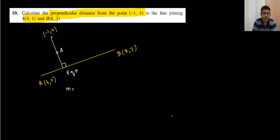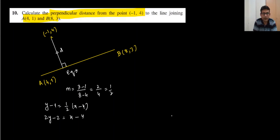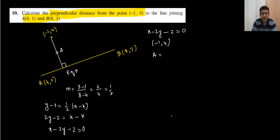The gradient of line AB is: 3 minus 1 divided by 8 minus 4, which is 2 over 4, equals 1 over 2. Using the point-slope form with point (4, 1): y minus 1 equals one-half times x minus 4. Multiplying through by 2 gives 2y minus 2 equals x minus 4. Rearranging so that x is positive: x minus 2y minus 2 equals zero. So the line equation is x minus 2y minus 2 equals zero, giving A equals 1, B equals minus 2, C equals minus 2.